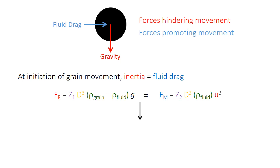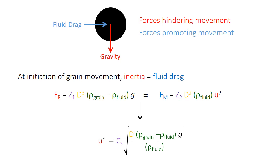At the exact moment when the particle just starts to move, the two forces — inertia and fluid drag — will be exactly balanced. If inertia is bigger, the particle won't move; if drag is bigger, it will. So the particle just starts to move when those forces become equal. We can write this as a mathematical equation that takes our two previous equations and sets them equal, then use algebra to solve for U*, called the critical velocity — the velocity necessary to move a particle of a given size and density.